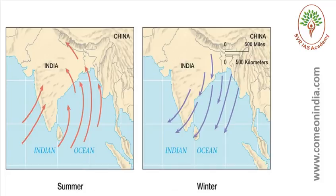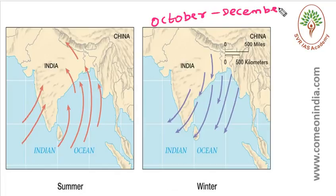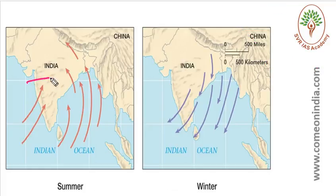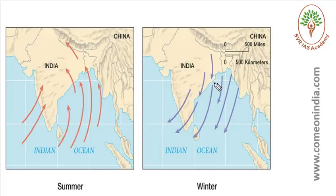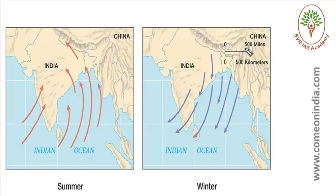Northeast monsoon usually starts in October and ends in December. So the October to December period is often referred to as the Northeast monsoon season. It mainly brings rainfall to Peninsular India — this is one very important exam point. It is also called the post monsoon season.